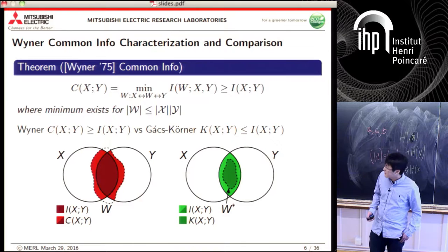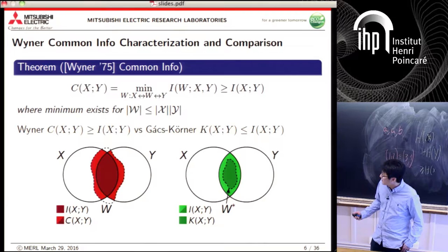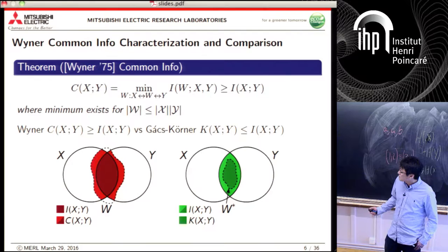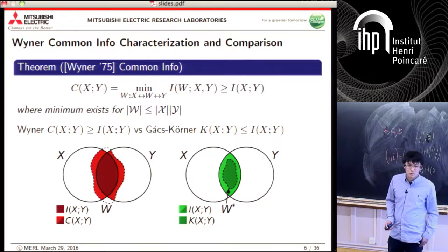Comparing Wyner and Gács-Körner conceptually: Wyner is finding the smallest random variable W that covers X and Y, so Wyner common info is the overlap region covering both X and Y. Gács-Körner is finding the largest W that lives entirely within the mutual information. There are also other operational definitions from the Gray-Wyner coding problem, where an encoder with sequences X and Y produces three messages — a private message for decoder one (reproducing X), a private message for decoder two (reproducing Y), and a common message for both. Wyner common info is the minimum common rate needed while coding efficiently (total sum rate no larger than joint entropy), and Gács-Körner common info is the maximum common rate achievable while coding efficiently in a different sense.